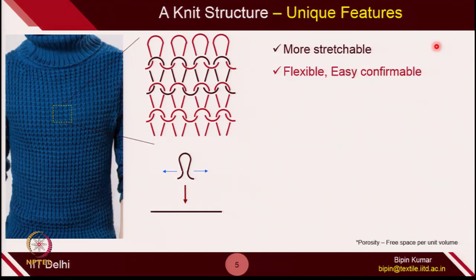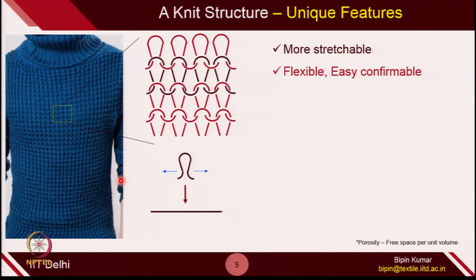The second most interesting feature of knitting is that it is very, very flexible as well. You can see it can fit to the body contour very easily. Compared to a woven shirt, where you have to give the proper shape and size — you have to cut the garment properly and then it can fit to your body by proper tailoring — in the case of knitted fabrics, most of the time it can fit very easily and conform to your body properly, because it is very, very flexible. This is one of the very unique features, especially in knitted garments.